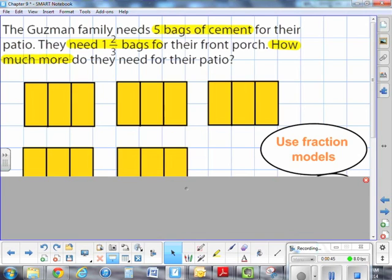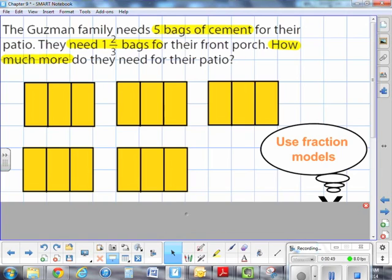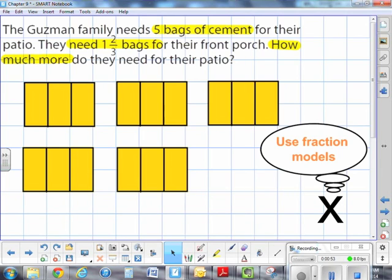So I'm going to be subtracting 5 minus 1 and 2/3. So I set up my area models. There I have 5. They're partitioned into thirds because that's what I'm going to be subtracting by. And it'll make my life easier.